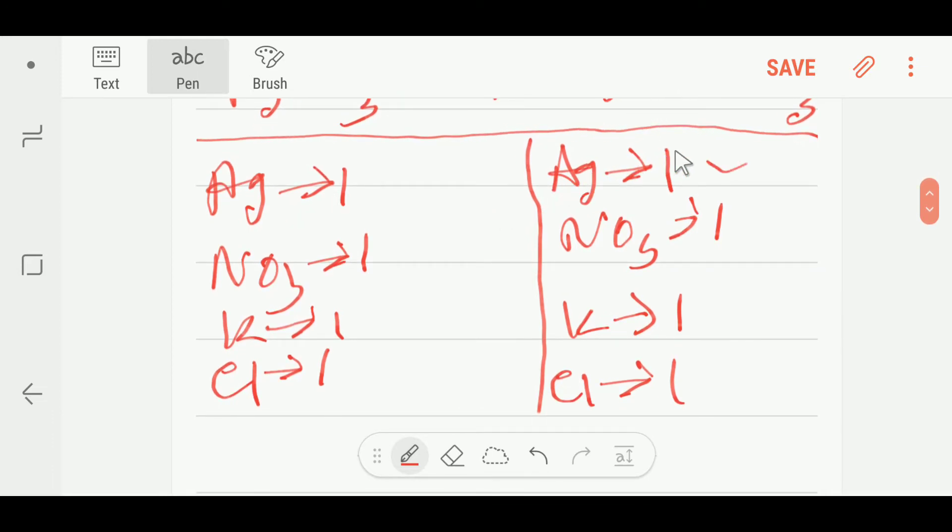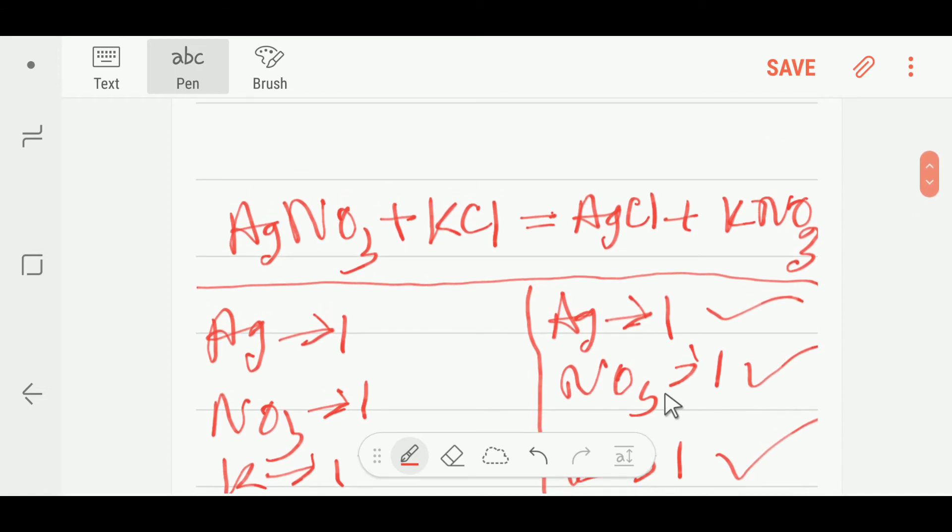Here silver: 1, 1, so silver is balanced. Here nitrate: 1, 1, so nitrate is balanced. Here potassium: 1, 1, so potassium is balanced. Here chlorine: 1, 1, so chlorine is balanced. So this equation is already balanced.